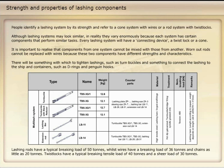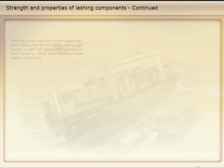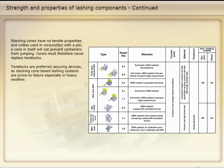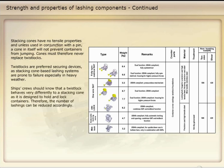Twist locks have a typical breaking tensile load of 40 tonnes and a shear load of 30 tonnes. Stacking cones have no tensile properties, and unless used in conjunction with a pin, a cone in itself will not prevent containers from jumping. Cones must therefore never replace twist locks. Twist locks are preferred securing devices, as stacking cone-based lashing systems are prone to failure, especially in heavy weather. Ship's crews should know that a twist lock behaves very differently to a stacking cone, as it is designed to hold and lock containers; therefore, the number of lashings can be reduced accordingly.